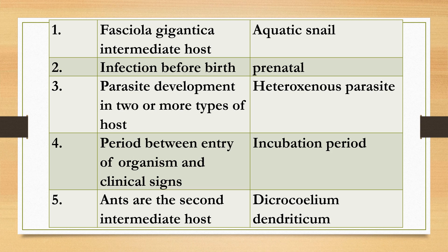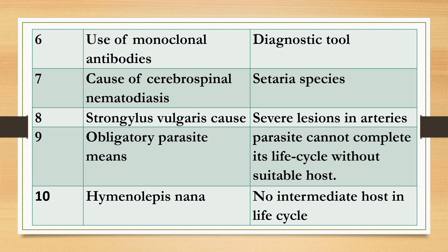Question four: The period between entry of an organism and showing of clinical signs. Answer: incubation period. Number five: Ants are the second intermediate host of which parasite? Answer: Dicrocoelium dendriticum. Number six: Use of monoclonal antibodies. Answer: diagnostic tool. Number seven: Cause of cerebrospinal nematodiasis. Answer: Setaria species.